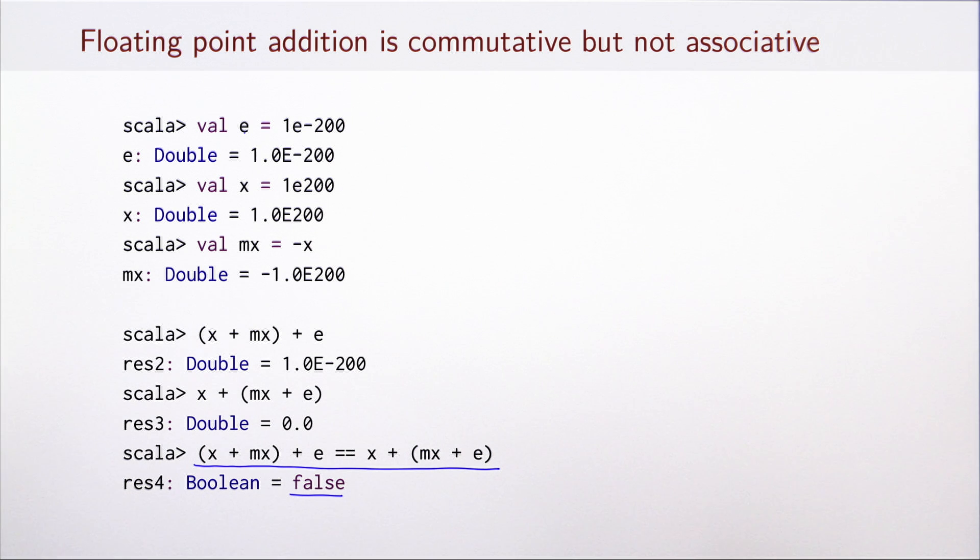Here I define some concrete values as an example for when this can happen. We define e to be a very small positive value, x is a very large positive value, and mx is a very large negative number. Now, x plus mx will be zero, and when we add e, we will get this very small positive number e. On the other hand, what happens when we compute things in different order with different parentheses? Well, mx plus e cannot be represented precisely, and because we do approximation, the value of e will essentially be lost. So this expression will evaluate to mx, and when we add x and mx, the result will be zero. And this is why we obtain violation of associativity law.